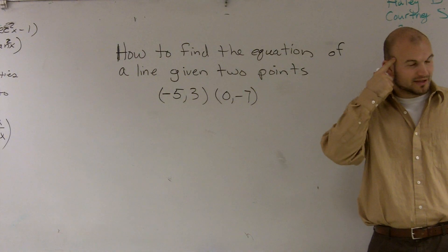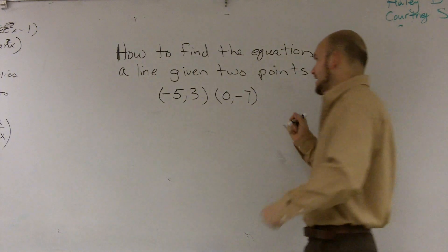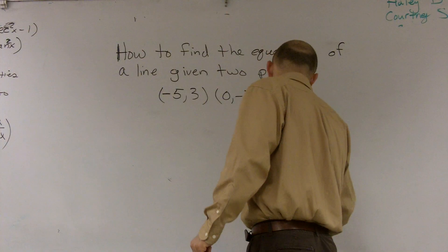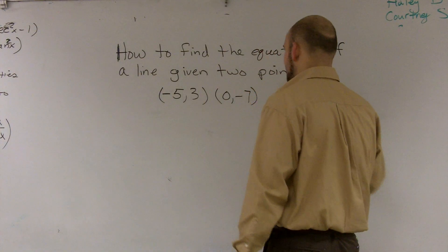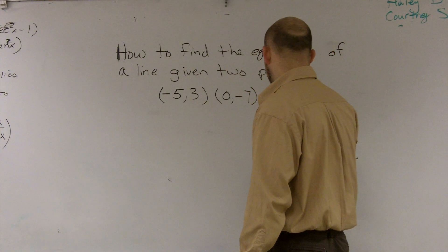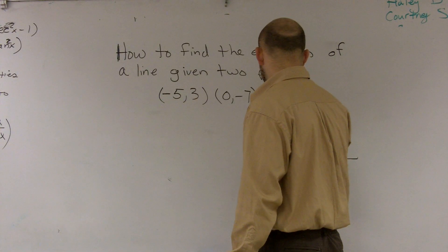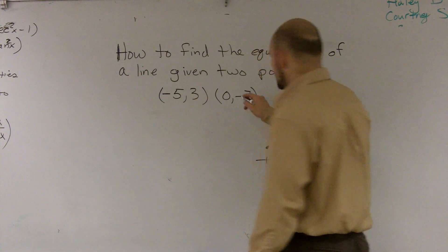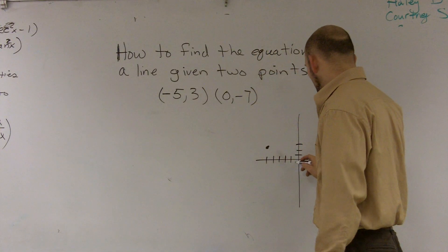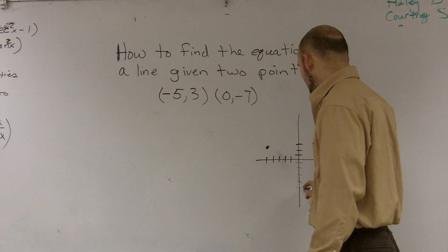So if I'm thinking about this visually or graphically, I could say, well, if I wanted to graph these, I'd say negative 5, 1, 2, 3, 4, 5, up 3, somewhere around there, and 0, negative 7 is 1, 2, 3, 4, 5, 6, 7.